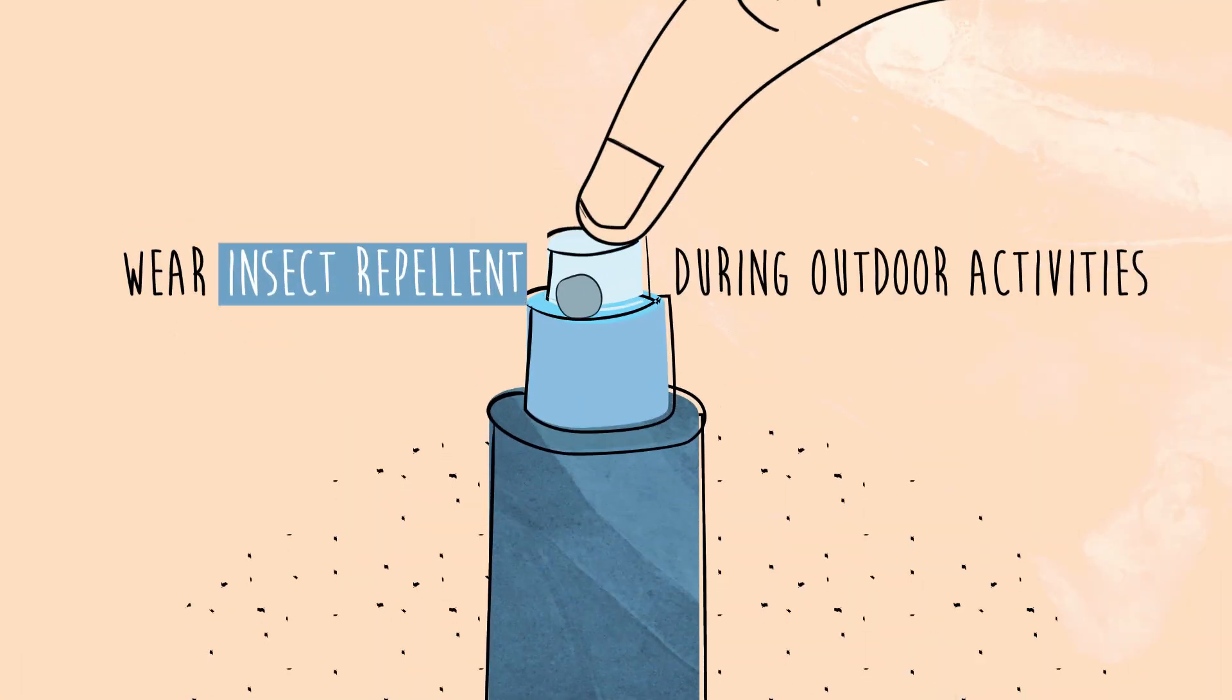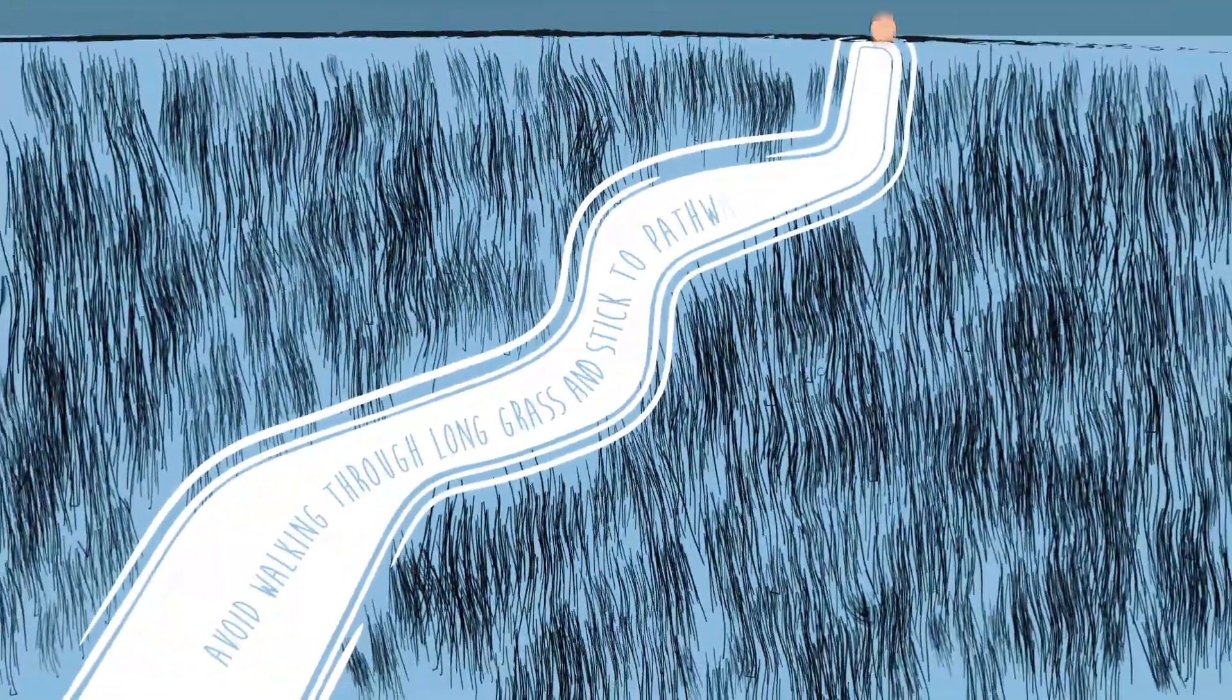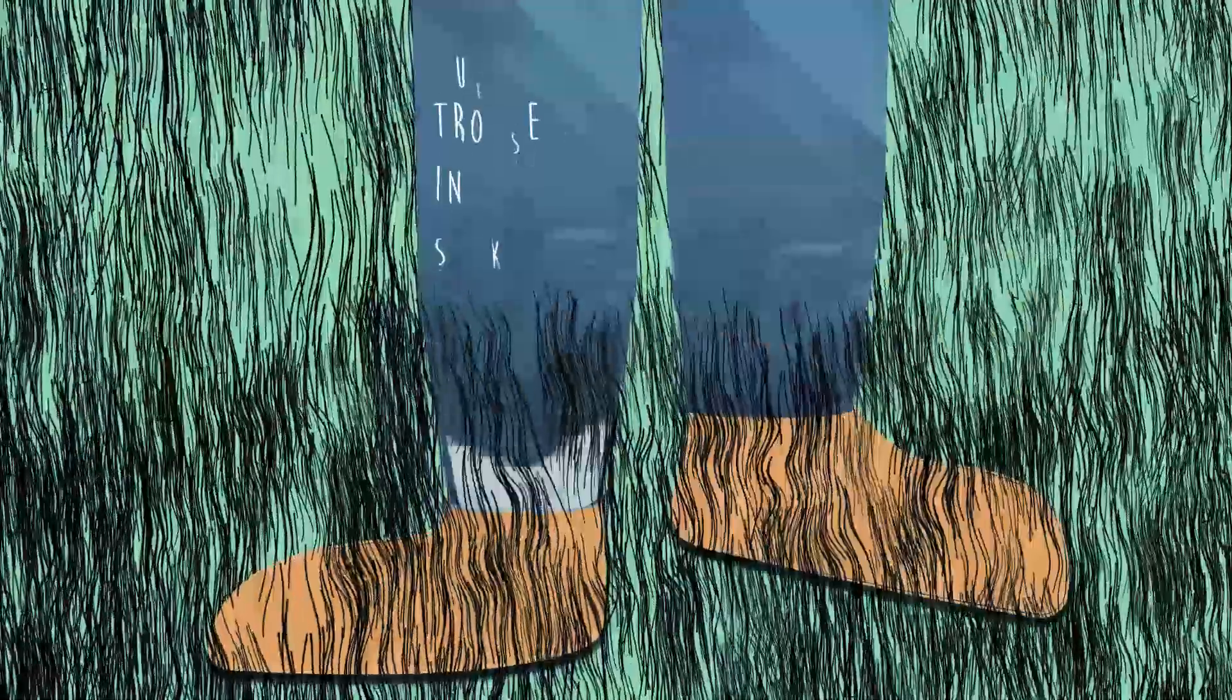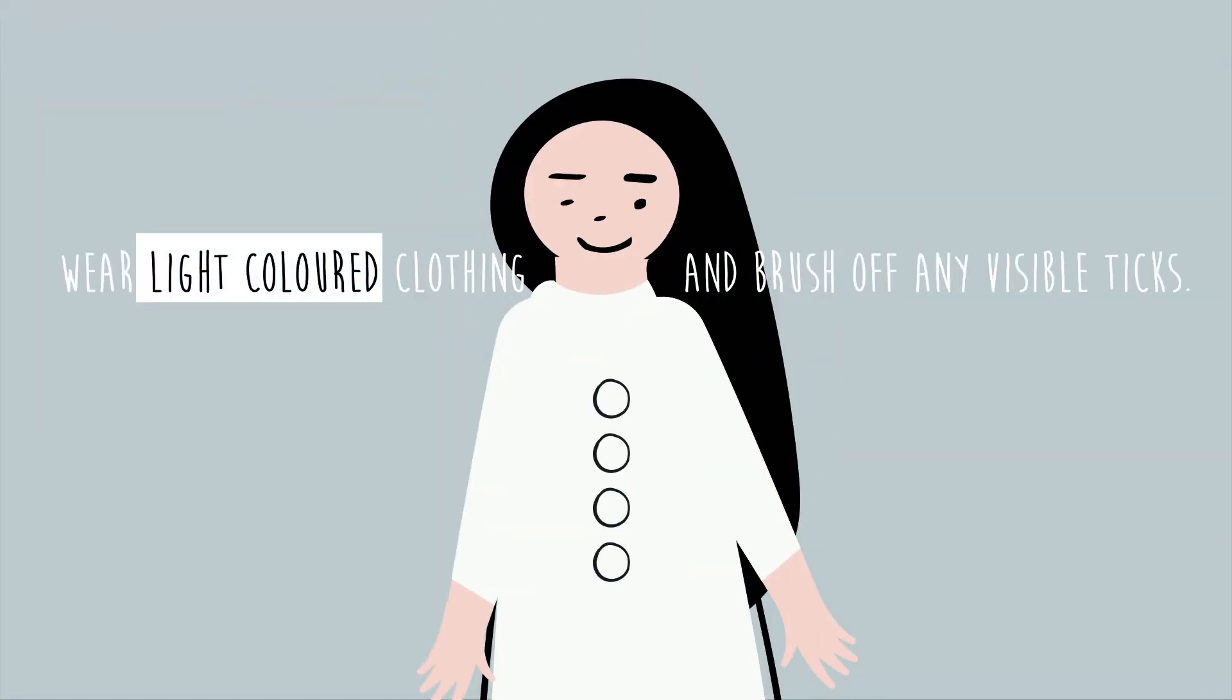Here are some tips to protect yourself and your family from tick bites. Wear insect repellent during outdoor activities. Avoid walking through long grass and stick to pathways. If you have to walk in long grass, tuck trousers into socks. Wear light colored clothing and brush off any visible ticks.